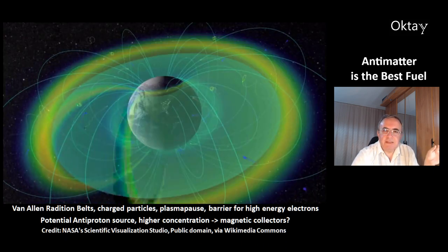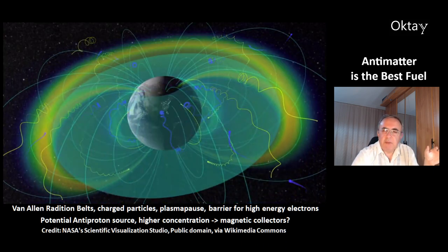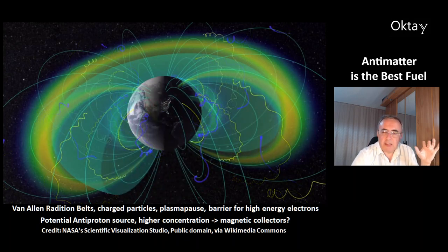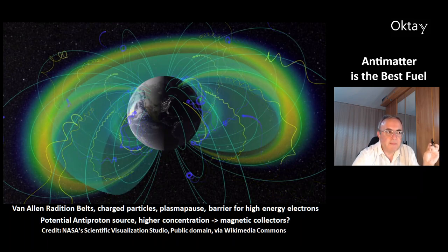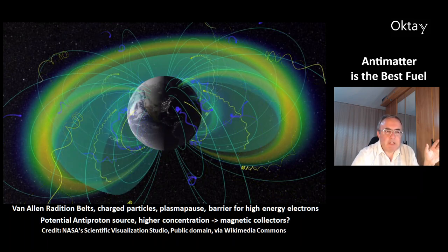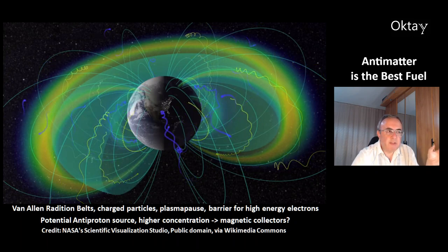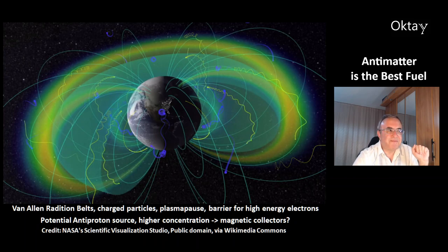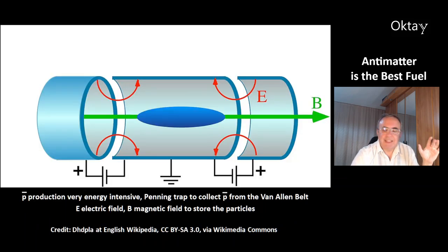This is an animation of the Van Allen radiation belts — there is an inner belt and an outer belt, consisting of charged particles. There is also a plasma plume, which acts as a barrier for high-energy electrons. This belt is a potential source for antiprotons, because they are in higher concentration there. Theoretically, you could use magnetic collectors to collect these antiprotons. One device, the Penning trap, uses an electric field and a magnetic field to store antiproton particles in the center.